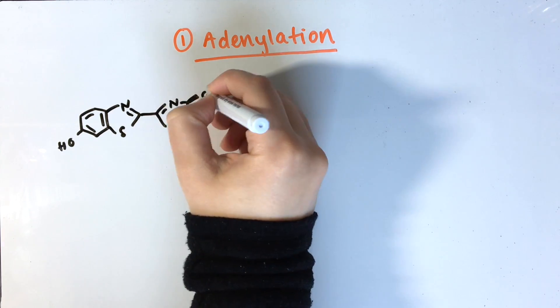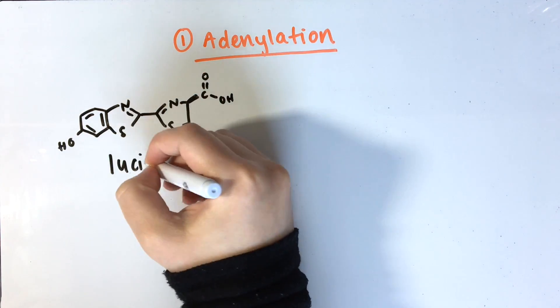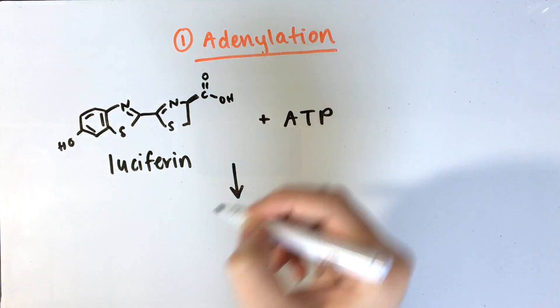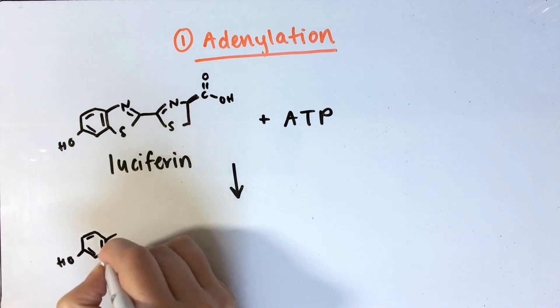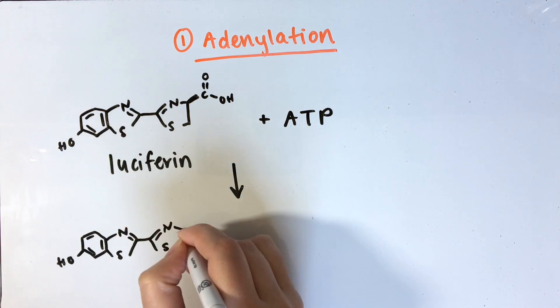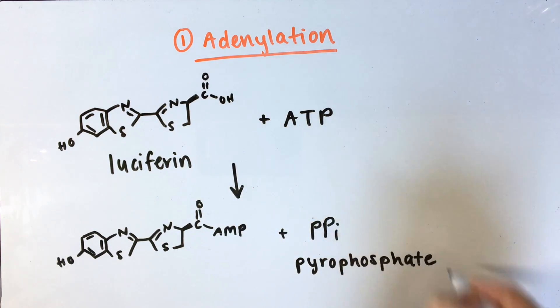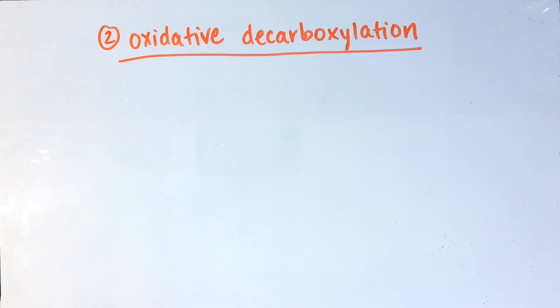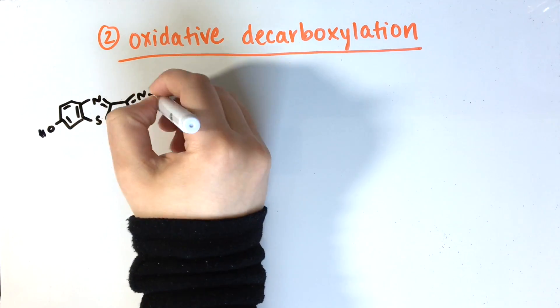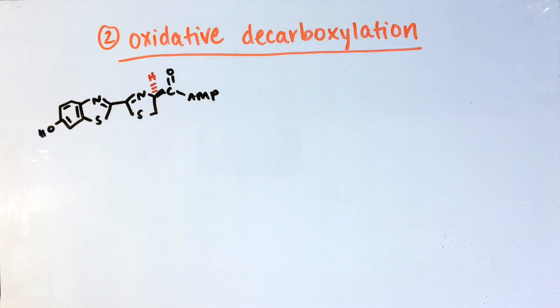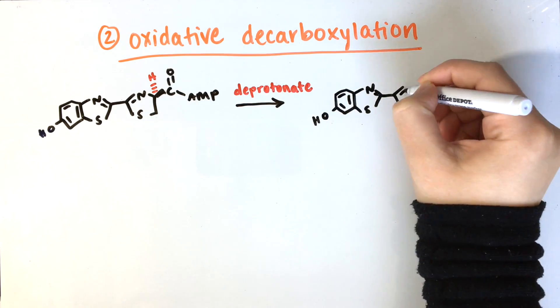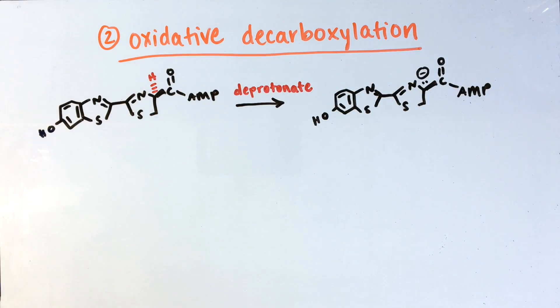Although the exact mechanism is not known, the generally accepted mechanism is as follows. Luciferase first binds luciferin and ATP. Magnesium is needed to shield the negative charges on ATP. Luciferin acts as a nucleophile and attacks ATP to form a luciferyl adenylate still bound to the enzyme. Pyrophosphate is released. A residue in the active site of the enzyme then deprotonates the adenylate. The carbanion can now attack molecular oxygen.